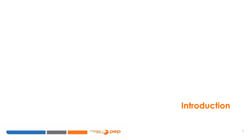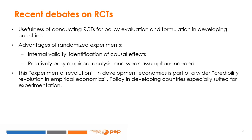This is the module on Spillover, Externalities and General Equilibrium Effects in Randomized Control Trials, part of the Partnership for Economic Policies Policy Impact Analysis. There were some recent debates about the usefulness of randomized control trials for policy evaluation and formulation in developing countries. Randomized control trials have several advantages. Their internal validity allows us to have a precise identification of causal effects and their empirical analysis is relatively easy, with very weak assumptions needed to infer causality. This experimental revolution in developing economics is part of a wider credibility revolution in empirical economics, and policies in developing countries have been especially suited for experimentation, which has been used in the recent past with great success.